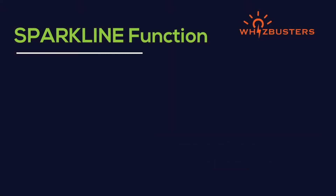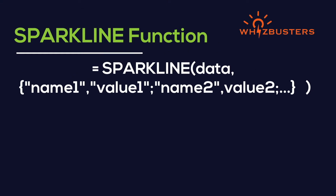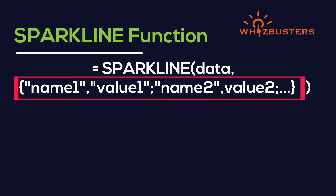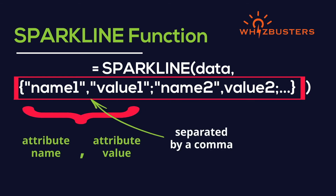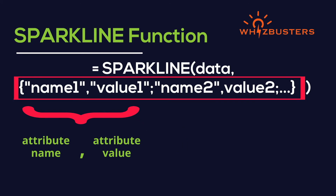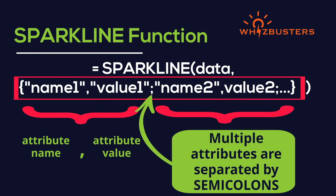The syntax when using the second parameter is: when defining the attribute, we need to have the attribute name and the value for the attribute in a pair separated by a comma. Multiple attributes are separated by semicolons.